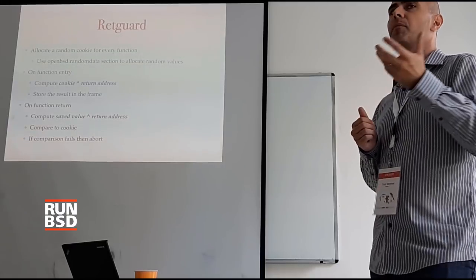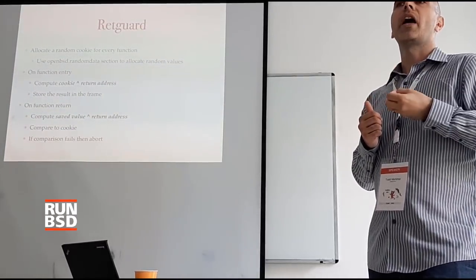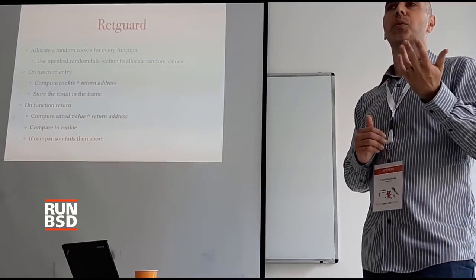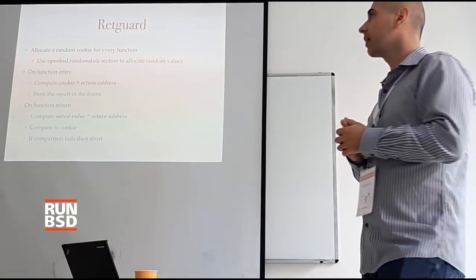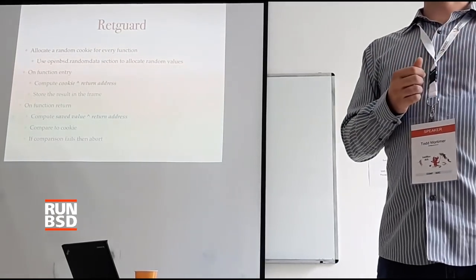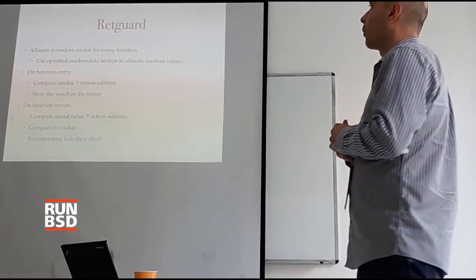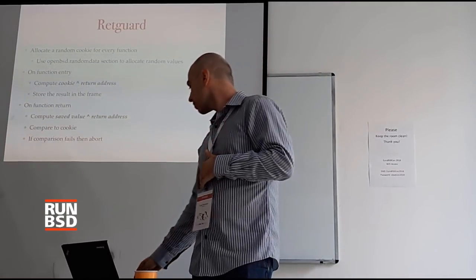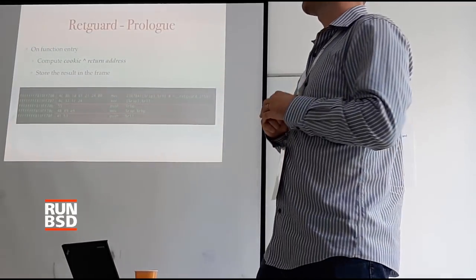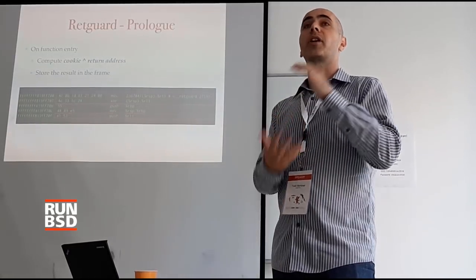The way RectGuard works is pretty straightforward. We do some computation at the beginning of a function on function entry — we remember what address we came from. When we return, we verify the address we're going to is the same address we came from. We insert some instructions before the RET so that gadget tools can't use that return in a real way. For every function, we allocate a random cookie using the OpenBSD random data section — a section of the ELF executable that the kernel fills with random data at launch. We allocate one cookie for every function. On function entry: load the random cookie, XOR it with the return address, and store that computed value in the frame.